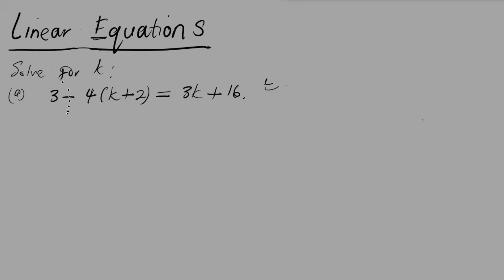Let's get back to this example. We need to solve for k; we have k on the left side and k on the right side. Whenever you're working with an equation or expression, keep in mind the BODMAS rule — deal with what's in the bracket first, then remove the brackets, then multiply or divide before you subtract. So the 3 stays as is, and we now remove the bracket by distributing the negative 4 — negative 4 multiplied by k gives negative 4k.